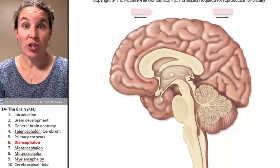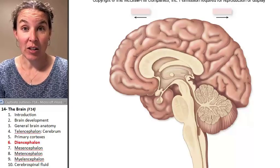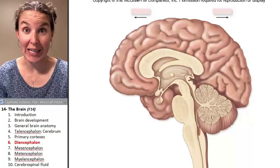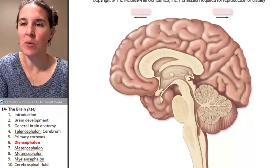So now let's look at structures that arise from the diencephalon. There are three. That's nice, let's make a list of them right now.